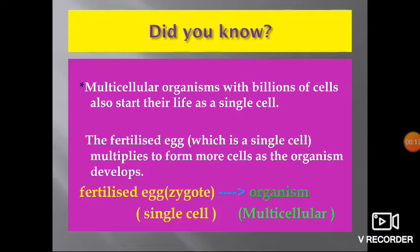Did you know multicellular organisms with billions of cells also start their life as a single cell? The fertilized egg, which is a single cell, multiplies to form more cells as the organism develops. The fertilized egg is called a zygote. The zygote is a single cell and it divides by cell division, increasing the number of cells and later forming an organism.